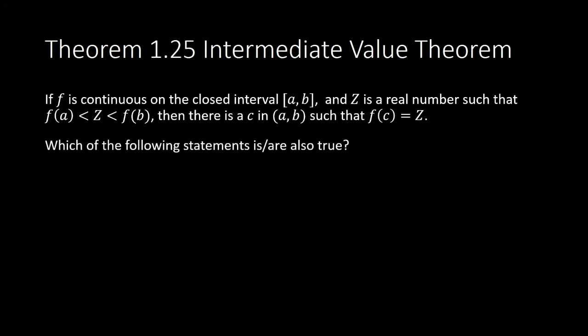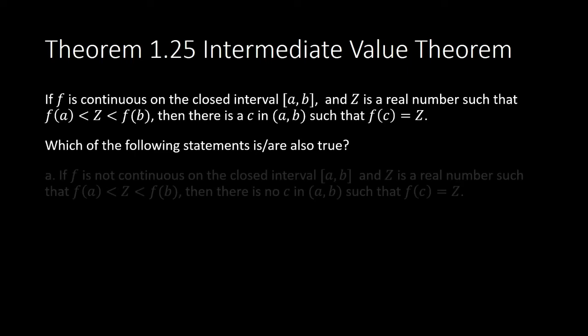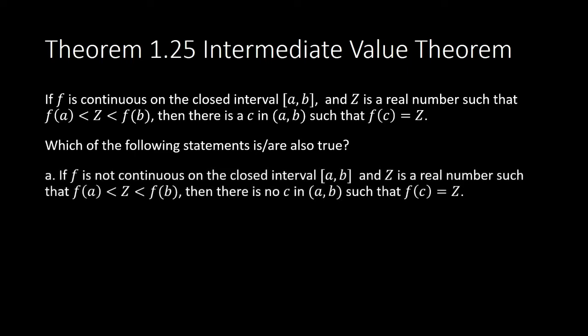Which of the following statements is or are also true? Statement a: If f is not continuous on the closed interval [a, b], and Z is a real number such that it is between f(a) and f(b), then there is no c in (a, b) such that f(c) equals Z. Is this true?